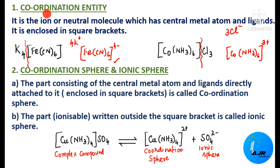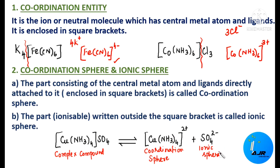Coordination sphere is the same as coordination entity — they are otherwise the same. The part consisting of the central metal atom and ligands directly attached to it, enclosed in a square bracket, is called the coordination sphere. The part written outside the square bracket is called the ionic sphere. For example, SO₄²⁻ written outside is the ionic sphere.